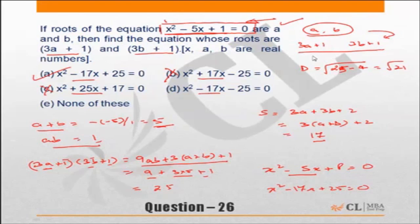But if you are not getting natural numbers as roots, you are getting irrational numbers or difficult numbers as roots, then you are better off solving it the way we have just solved here. That if the new roots are 3a plus 1 and 3b plus 1, the new sum of roots has to be this much, new product of roots has to be this much, and hence the answer has to be this particular equation, choice a.